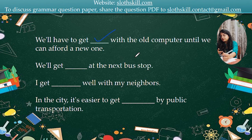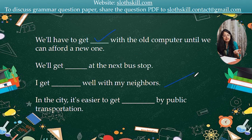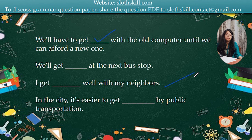We will get [blank] at the next bus stop — of course the answer is get off. Next: I get [blank] well with my neighbours. Just like I get along with my co-workers, I get along with my neighbours. I can communicate well with them.